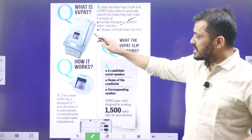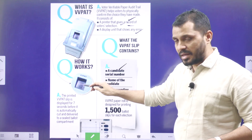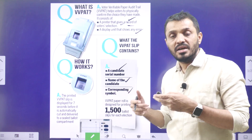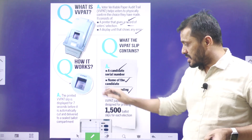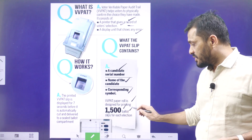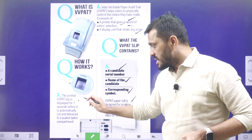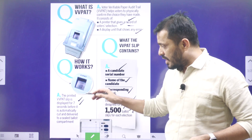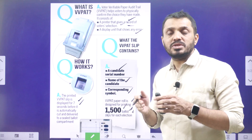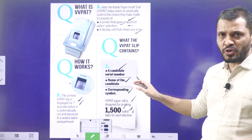VVPAT comes with a printer that gives a record of the voter's selection. It displays the candidate name, serial number, and symbol of the candidate, so the voter gets a chance to verify whether their vote is cast in the proper way. The VVPAT paper roll is designed for printing around 1,500 ballot slips per election. The display time is around 7 seconds, after which the slip is cut off and falls into a sealed box. Those slips can be accessed only by election staff.